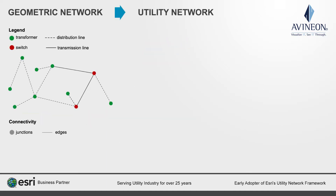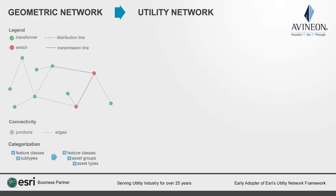At the fundamental level, junctions and edges remain the core to the new model and store connectivity. However, utility network changes the way junctions and edges are categorized for connectivity. The categorization is done using asset groups and asset types, unlike the subtypes previously used with geometric networks.